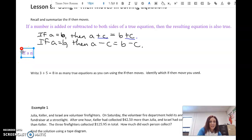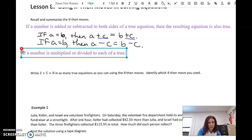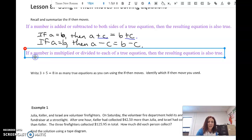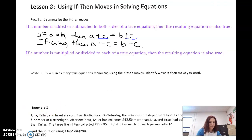We say if a number is multiplied or divided to each side of a true equation, so it has to be true to start, then the resulting equation is also true. If a equals b, then a times c has to equal b times c. These two things will still be equal as long as we multiply both sides by c.